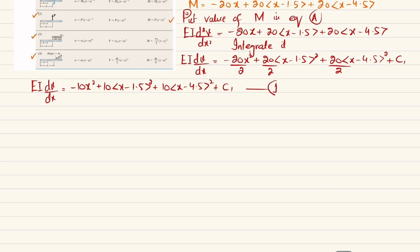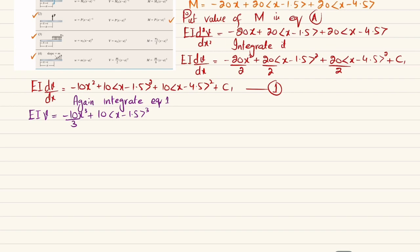Integrating Equation 1 again gives: EI·v = −(10/3)x³ + (10/3)⟨x − 1.5⟩³ + (10/3)⟨x − 4.5⟩³ + C₁x + C₂. Call this Equation 2.